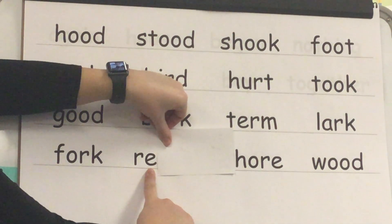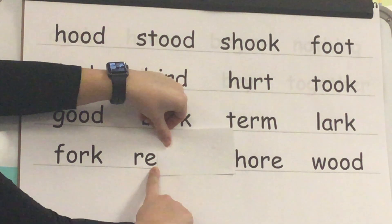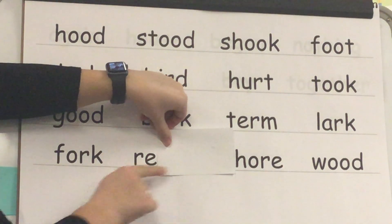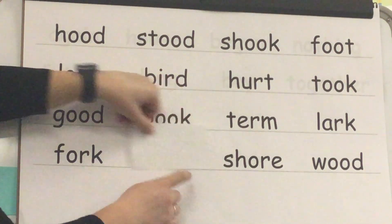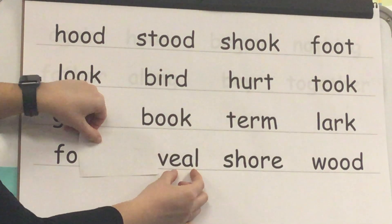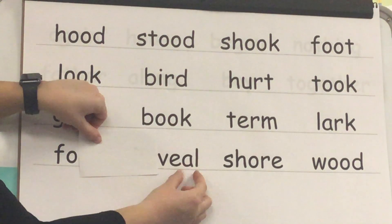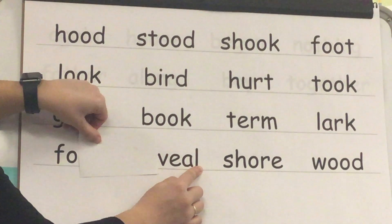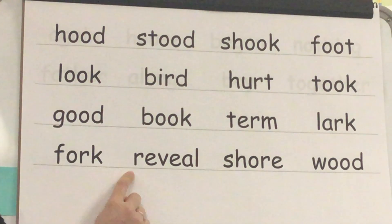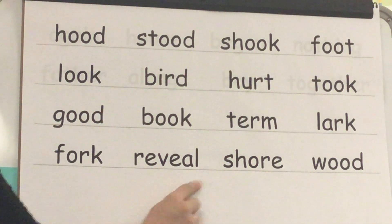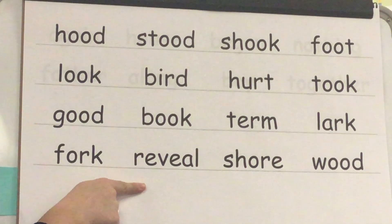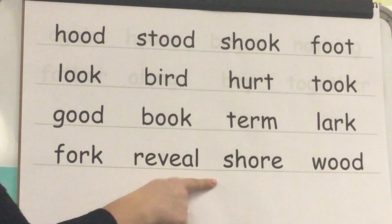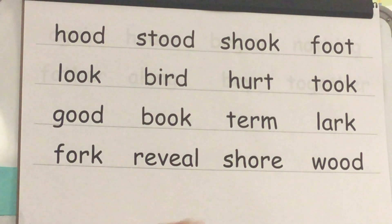Open syllable, sound E, part: RE, say E. Sound E, part: VEAL. Blend: RE-VEAL. Word: reveal. Yes, reveal.